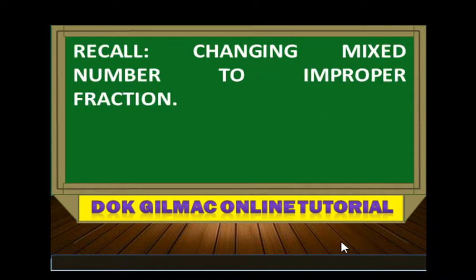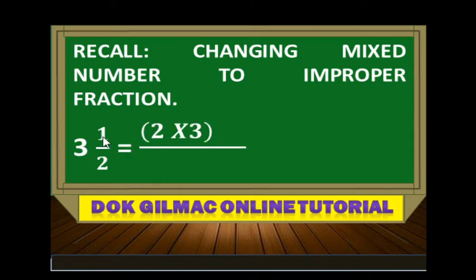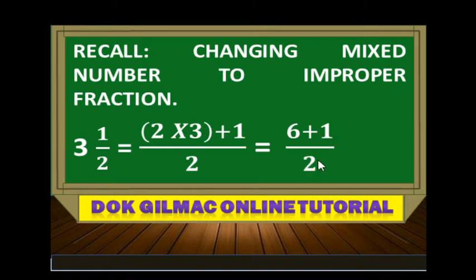Let's recall changing a mixed number to an improper fraction. 3 and 1 half is equal to 2 times 3 plus 1, all over 2, or 6 plus 1 all over 2, which is just equal to 7 over 2.